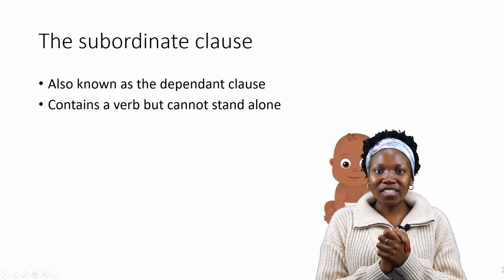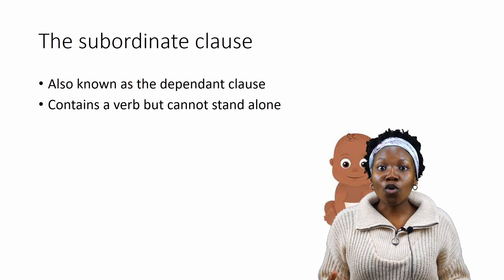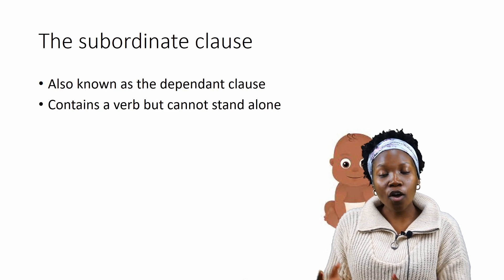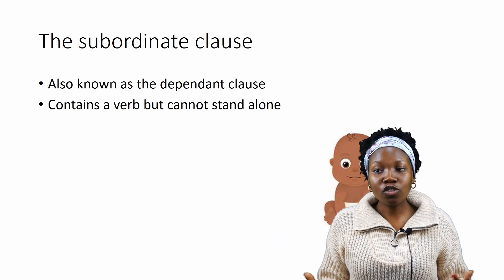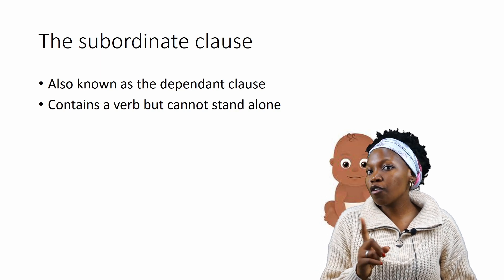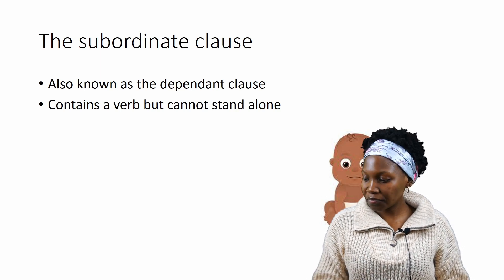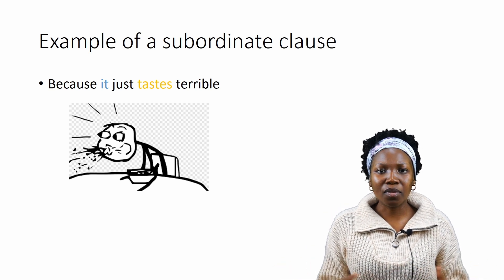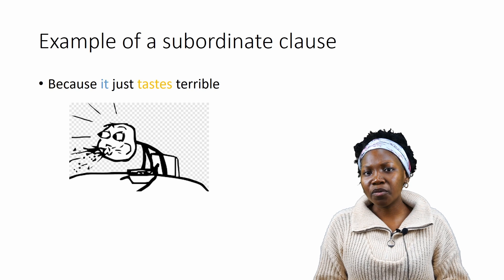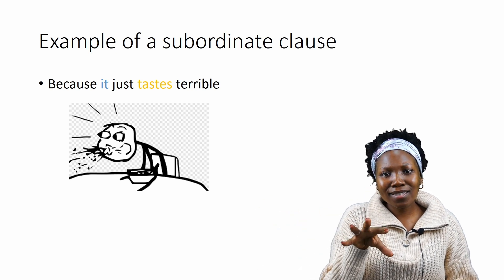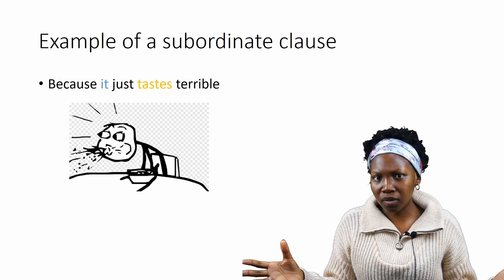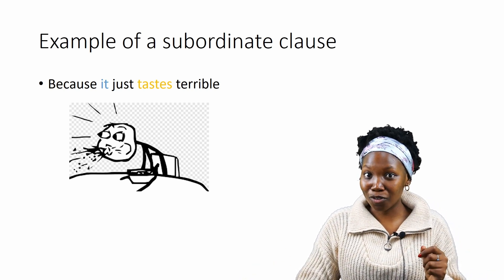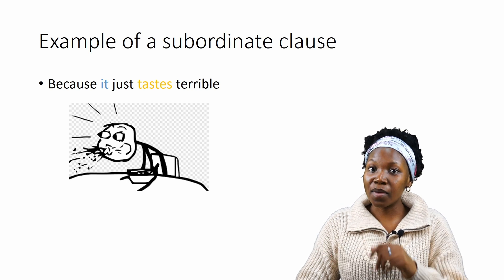Number two, the subordinate clause. It is known as the dependent clause because it is depending on something for it to make sense. It also contains a verb but it cannot stand on its own. For example, 'because it tastes terrible.' In this clause, what is the thing that tastes terrible? That's why it is a dependent clause — because by itself it makes no sense.